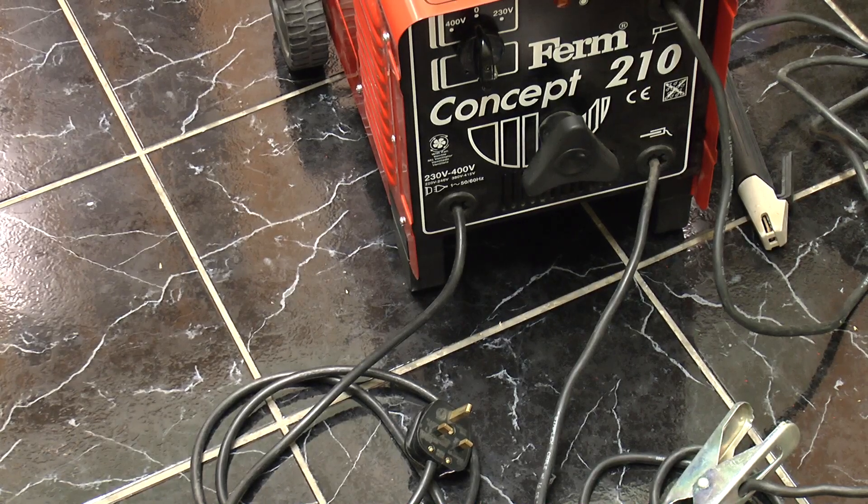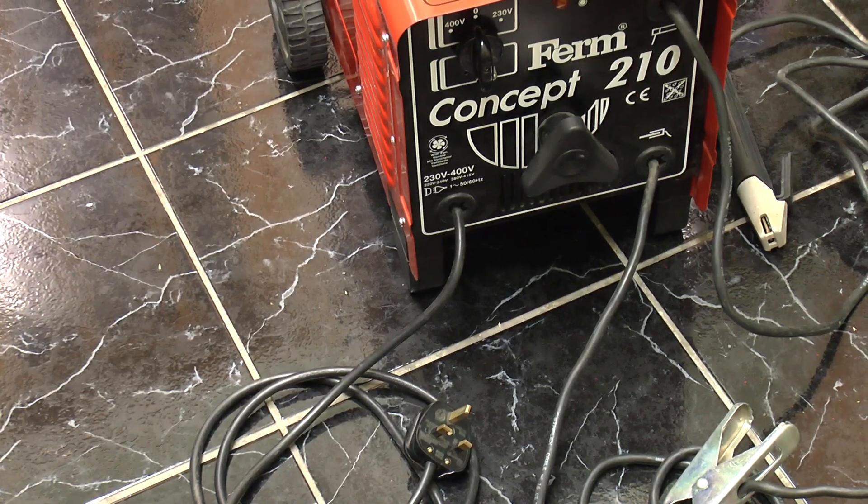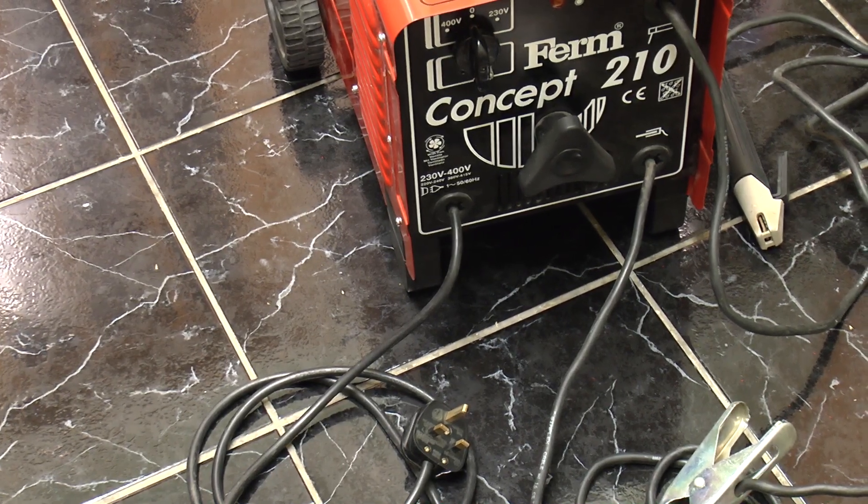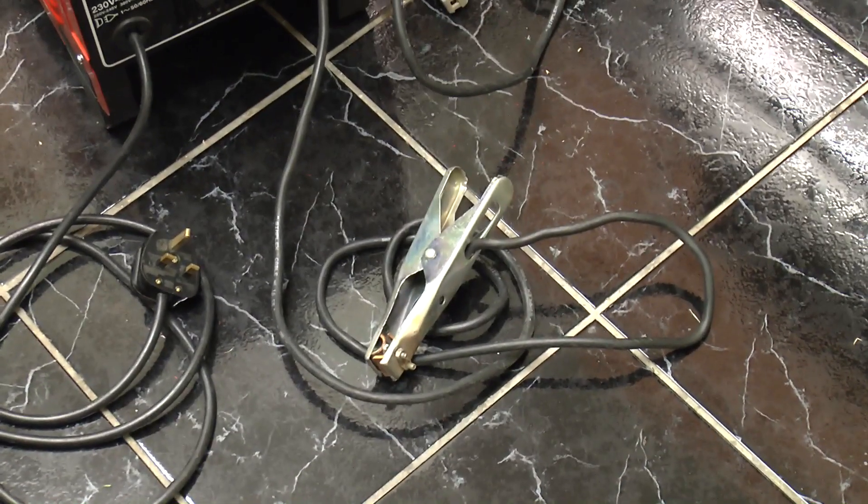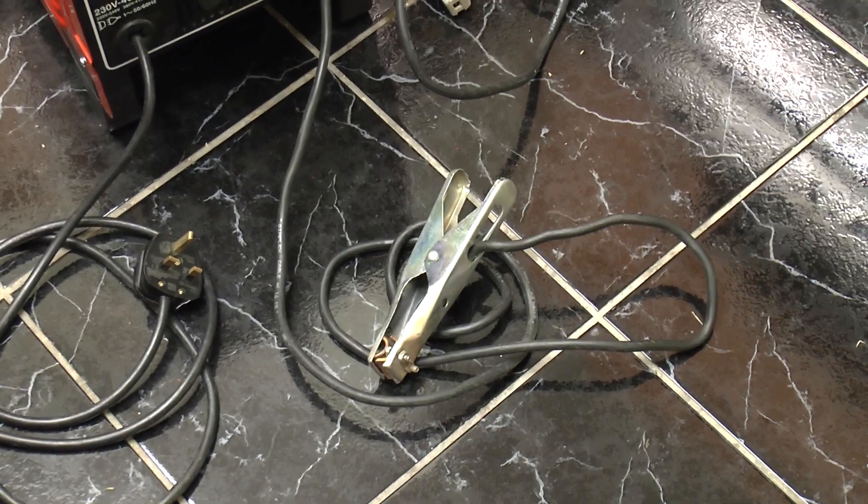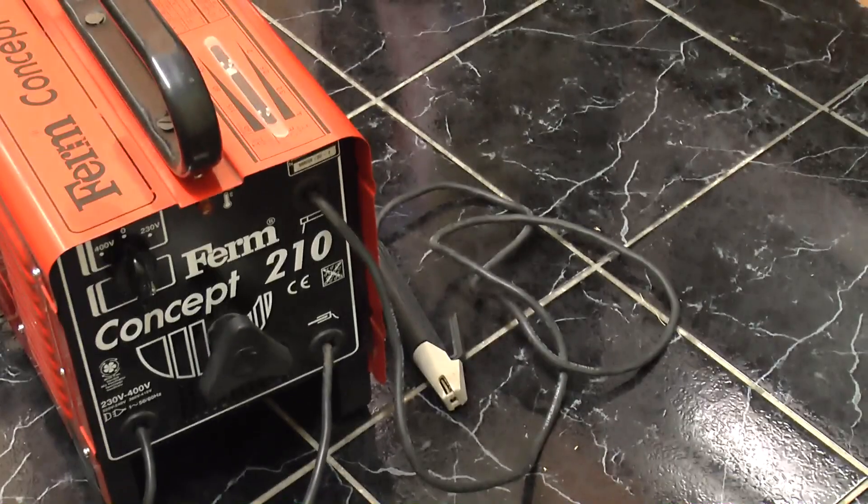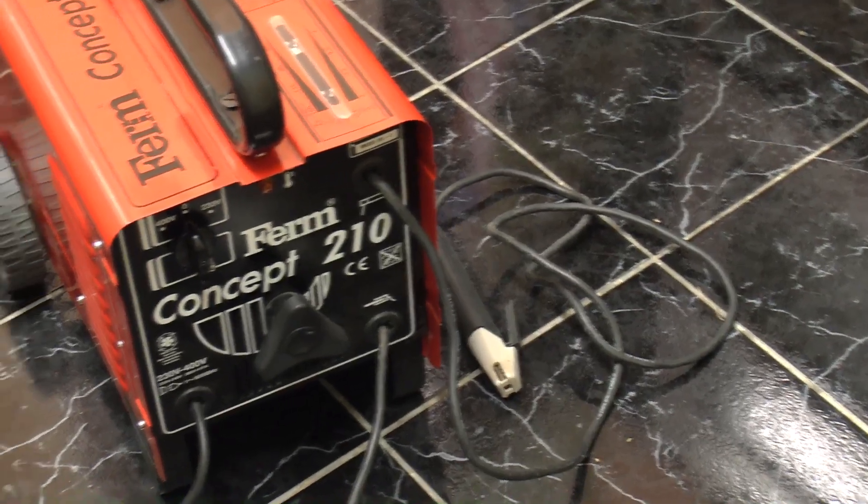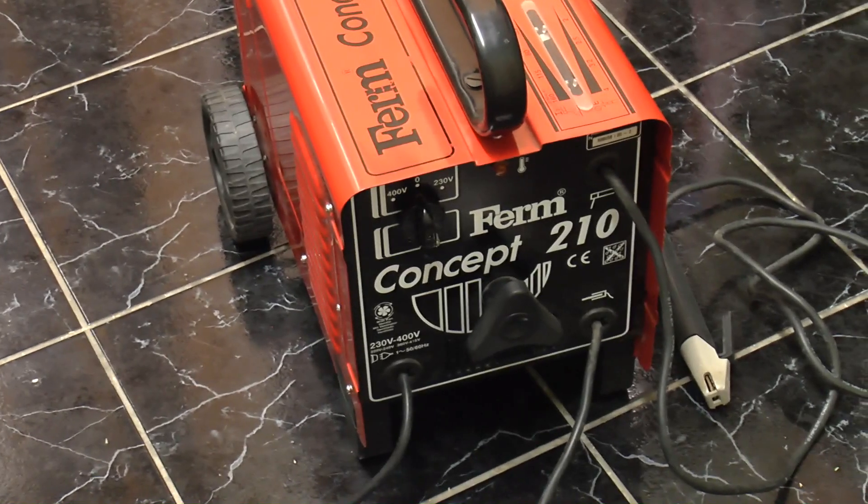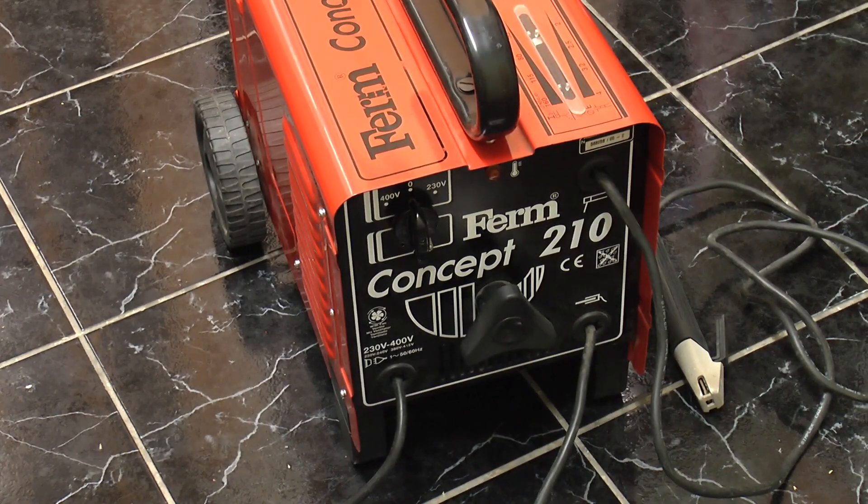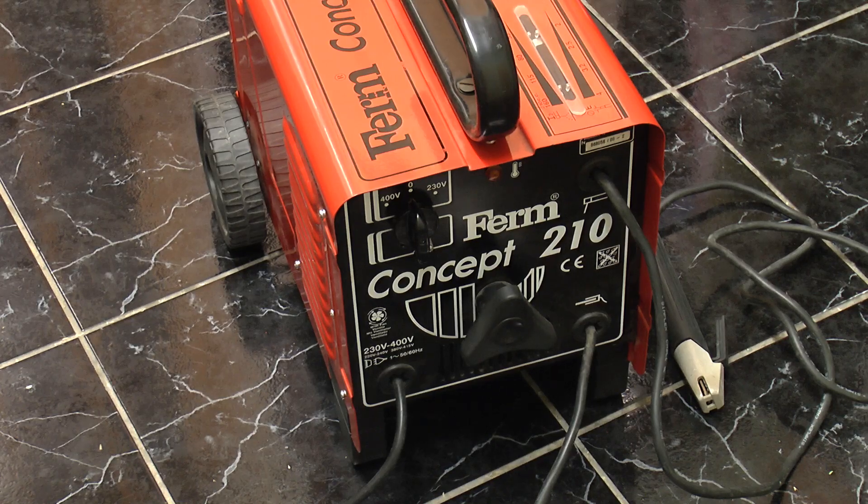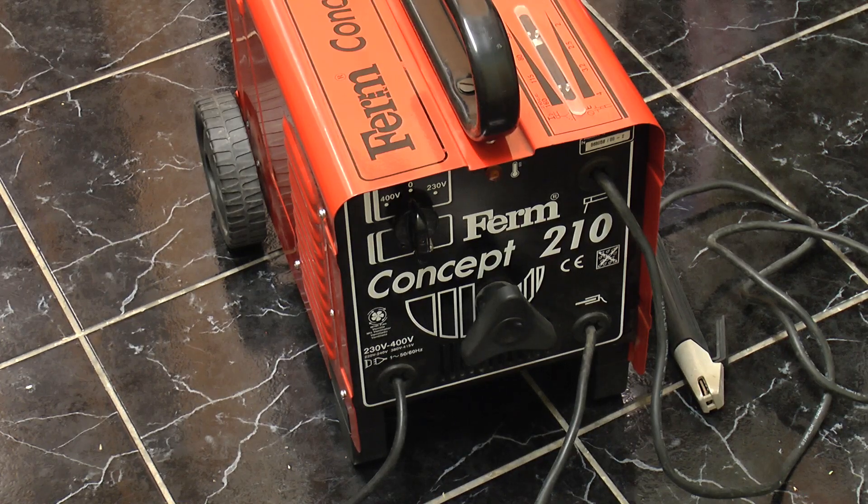On the bottom left we have the mains input cable which can be 230 or 400 volts. Bottom right we have the grounding electrode which you connect to the item being welded. Top right we have the welding electrode. Top left we have the on/off selector switch which has two voltage ratings depending whether you've connected to a 230 or 400 volt supply.